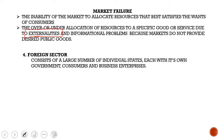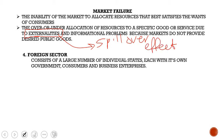An externality is a spillover effect — when people who are not part of the production process are affected either negatively or positively by that production process. You get positive externalities and negative externalities. Positive externalities are things such as public goods and services like health care and education, and negative externalities are things like pollution.